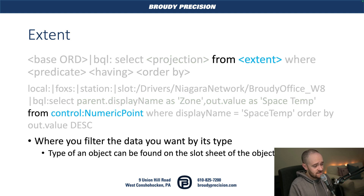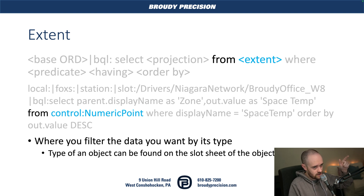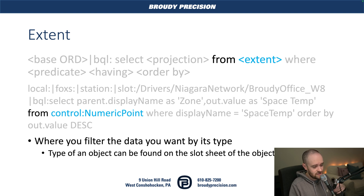Next is the extent. This always starts with "from" — so we're looking at results from objects that are of this type. In this example, we're looking at only objects that are numeric points. This is using the Niagara types. If you don't know what the type of the object is that you're looking for, you can find that type by going to the slot sheet of the object above what you're looking for. So if you're looking for an alarm extension, you would go to the slot sheet of the point that that alarm extension is on, and on that slot sheet you could find the actual type of the alarm extension.